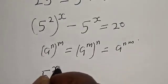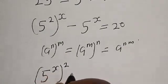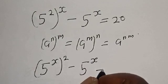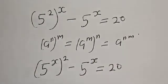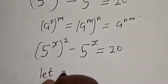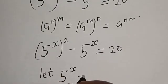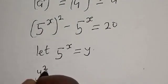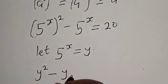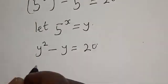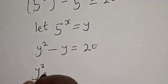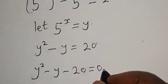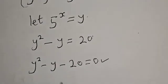We get 5 raised to power 2x minus 5 raised to power x is equal to 20. Let 5 raised to power x equal y. Then y squared minus y minus 20 is equal to zero. This is a quadratic equation.